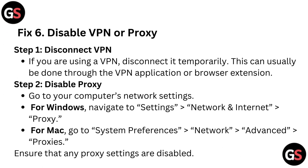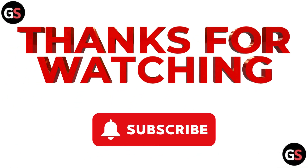Fix 6: Disable VPN or Proxy. Step 1 — Disconnect VPN: If you are using a VPN, disconnect it temporarily. This can usually be done through the VPN application or browser extension. Step 2 — Disable Proxy: Go to your computer's network settings. For Windows, navigate to Settings, then Network and Internet, then Proxy. For Mac, go to System Preferences, then Network, then Advanced, then Proxies. Ensure that any proxy settings are disabled.